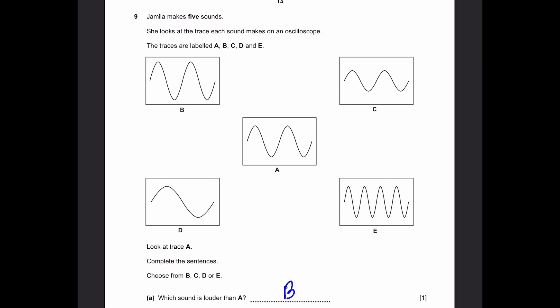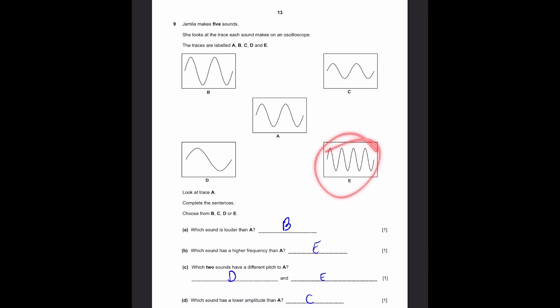Now we can go to question 9. Jamila makes 5 sounds. She looks at the trace each sound makes on an oscilloscope. The traces are labeled A, B, C, D, and E. Look at trace A. Complete the sentences and choose from B, C, D, or E. Part A: which sound is louder than A? That means it has a higher amplitude, and that's just B. It's slightly higher than the wave A. Part B: Which sound has a higher frequency than A? That's E, because it has more waves in one length of the oscilloscope. All these are the same length of the wave. Part C: Which two sounds have a different pitch to A? That means different frequency and that means a different number of waves. In this case, it's D and E, because A has two full waveforms and D has only one, E has four.